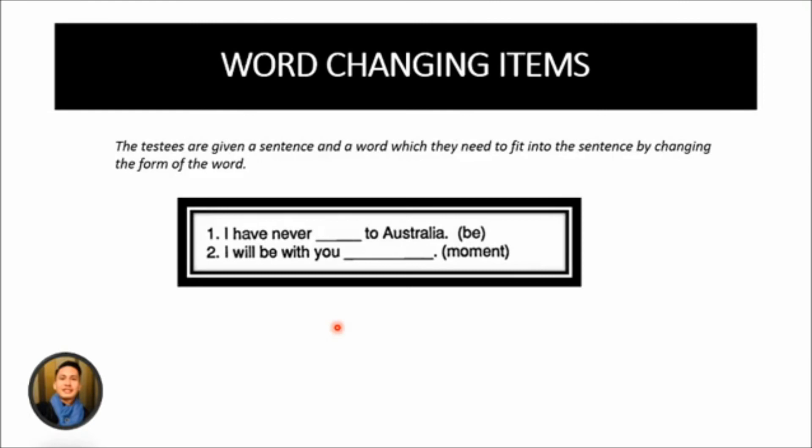Another type of test to test grammatical knowledge is the word-changing items. In here, the testees are given a sentence and a word which they need to fit into the sentence by changing the form of the word. This type of grammar item tests students' knowledge of different word forms and how they are used in the sentence.